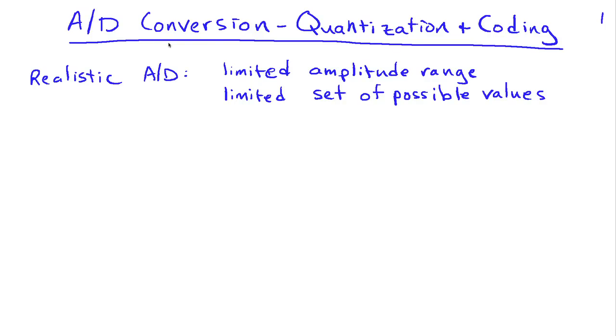Up to this point, when we've talked about sampling or conversion of a signal from analog form to digital form, we've ignored a couple of important issues that take place in the A to D converter.